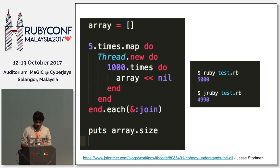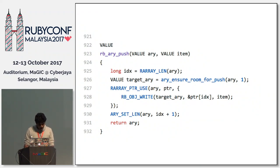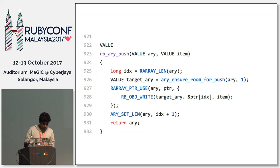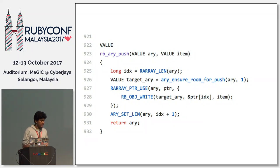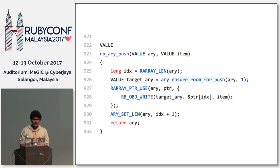I'd like to take you into the Ruby MRI C code that pushes objects to a Ruby array. In line 925, we get the length of the array as idx, then we push the object, and then in line 930 we increment the idx value by one — setting the array length to plus one — and we return the array. There can be scenarios where thread one gets idx = 0, then a context switch happens before line 930 executes. Thread two doesn't know thread one was about to increment, so it also reads idx as zero, executes the full method, then passes back to thread one, which still thinks idx is zero and increments to one. So two threads pushed two objects but the array length is still one — incorrect.